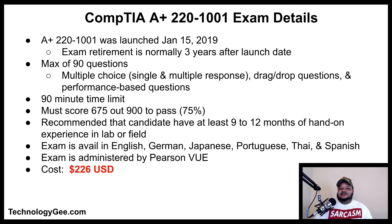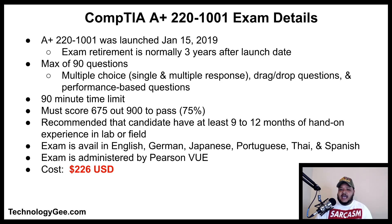The CompTIA A+ 220-1001 exam was launched January 15th, 2019. At the time of this recording, CompTIA has not scheduled a retirement date, but normally three years after launch is when an exam is retired. The exam has a maximum of 90 questions in multiple choice, drag and drop, and performance-based formats, with a 90-minute time limit. To pass, you need to score 675 out of a possible 900 points, which is 75%.